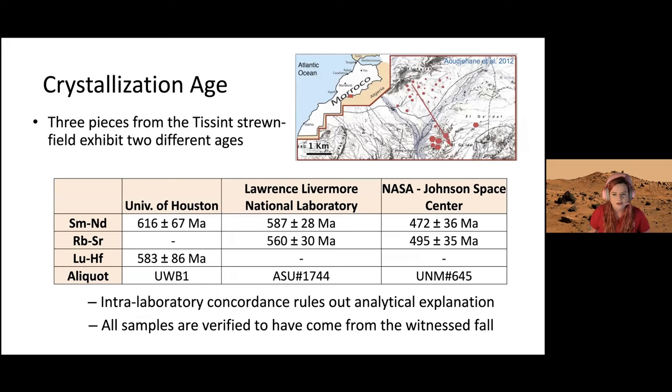The big question for my master's thesis: we like to assign crystallization ages as an important source of information, but with T-Cent there was a clash of ages—two different ages between three different institutions. It was a difference of about 120 million years. T-Cent fell as a strewn field—these red dots represent all the fall spots. It was noted that these separate institutions used separate pieces, so we hypothesized this might be a heterogeneous field, maybe two lava flows that fell together.